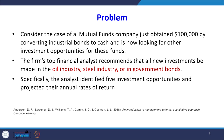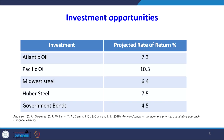Now let us take an illustrative problem to explain how to use linear programming for portfolio management. Consider a mutual fund company that has obtained $100,000 by converting industrial bonds to cash and is looking for other investment opportunities. The firm's top financial analyst recommends investing in the oil industry, steel industry, or government bonds. Specifically, the analyst identified 5 investment opportunities with projected annual rates of return: Atlantic Oil in the oil sector, Midwest Steel and Huber Steel in the steel sector, and government bonds.